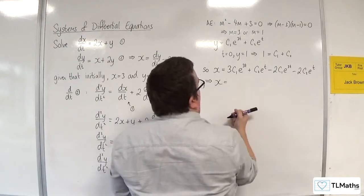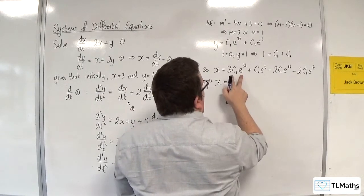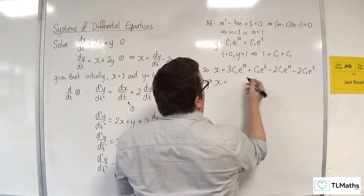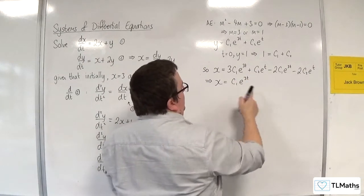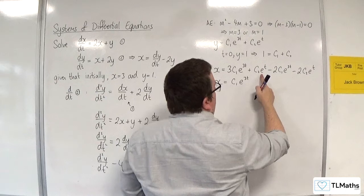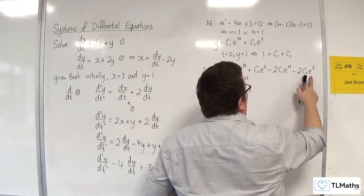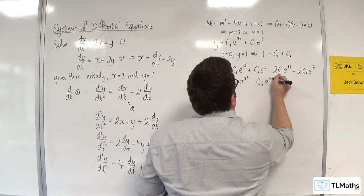So x is equal to, we've got the 3c1e to the 3t take away 2c1e to the 3t, so c1e to the 3t, take away c2e to the t.